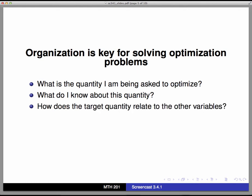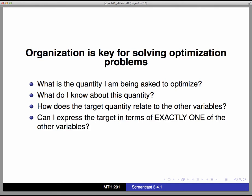Third, how does the target quantity that I'm trying to optimize relate to the other quantities in this problem? And can I write an expression that makes that relationship formal? And most importantly, can I express the target quantity that I want to optimize in terms of exactly one of the other variables in the problem?